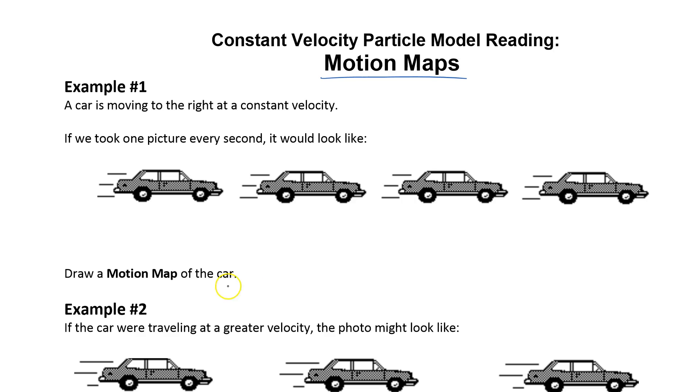Draw a motion map of the car. The first thing I've done is drawn an X axis to indicate position. So really this X here means position and I like to use the X letter for horizontal position. And this will be the origin or position zero and in this direction is positive.